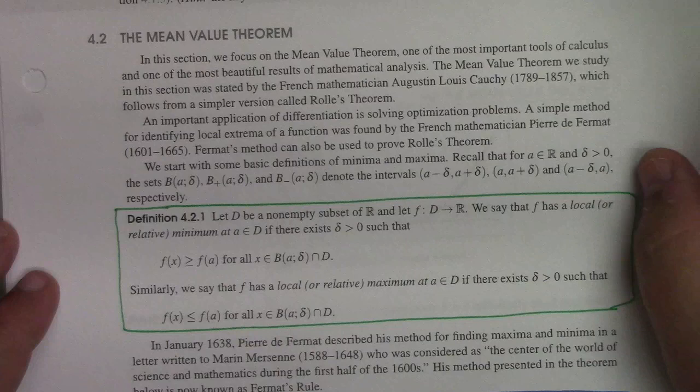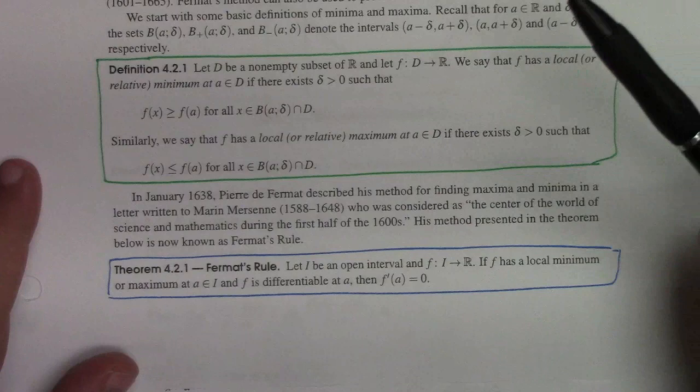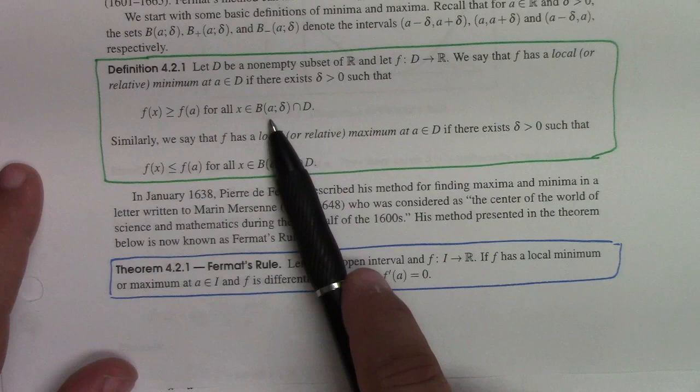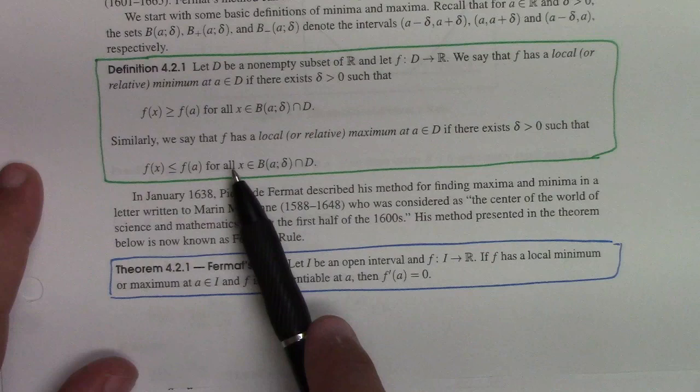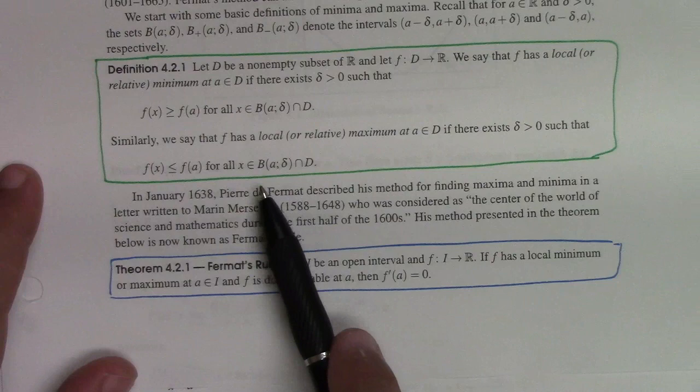First of all we need to define relative maximum and relative minimum. The function has a local minimum at a if f(x) is greater than or equal to f(a) for all x in the domain and sufficiently close to the point — you can pick some delta such that this inequality holds. Likewise, it's a local maximum if the value of f(a) is larger than the values of the function for all x sufficiently close to a in the domain.